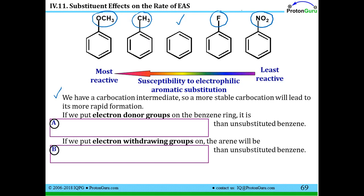What makes a carbocation more stable? It's when you have groups nearby to donate electrons to that carbocation. Scientists realized that electron donating groups on benzene make EAS reactions faster than with unsubstituted benzene, since they stabilize the intermediate carbocation. Conversely, electron withdrawing groups — like fluorine, which is very electronegative — make it harder to form a carbocation on the ring, slowing the reaction considerably.